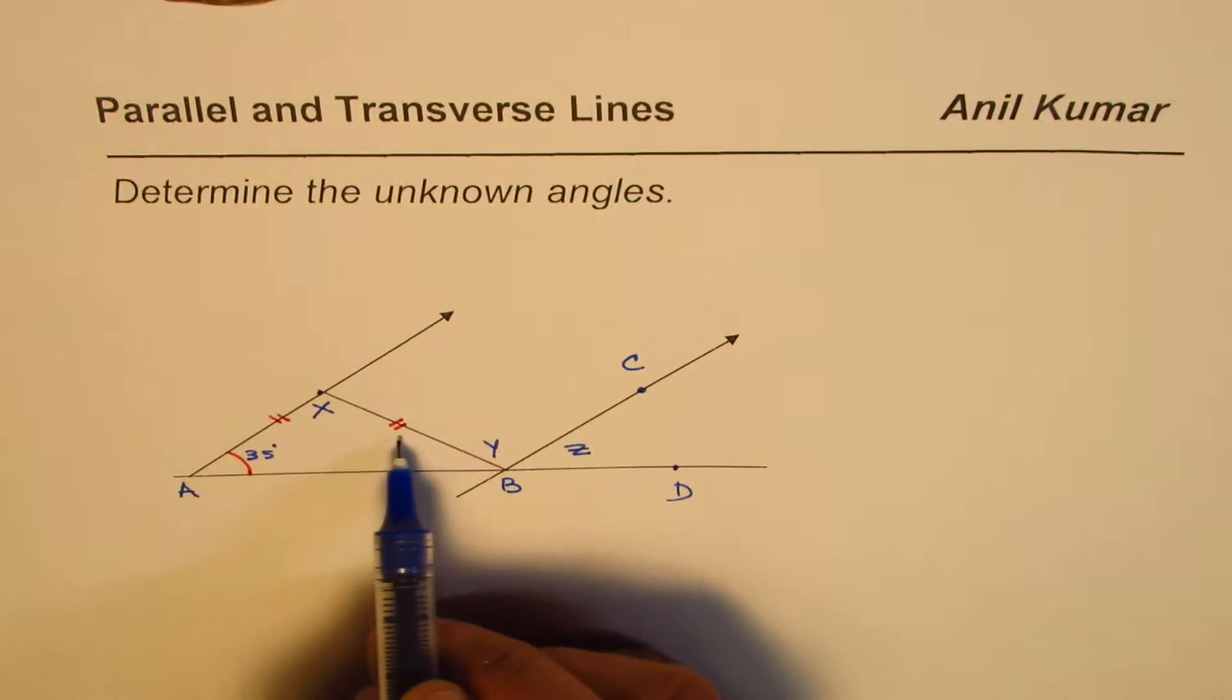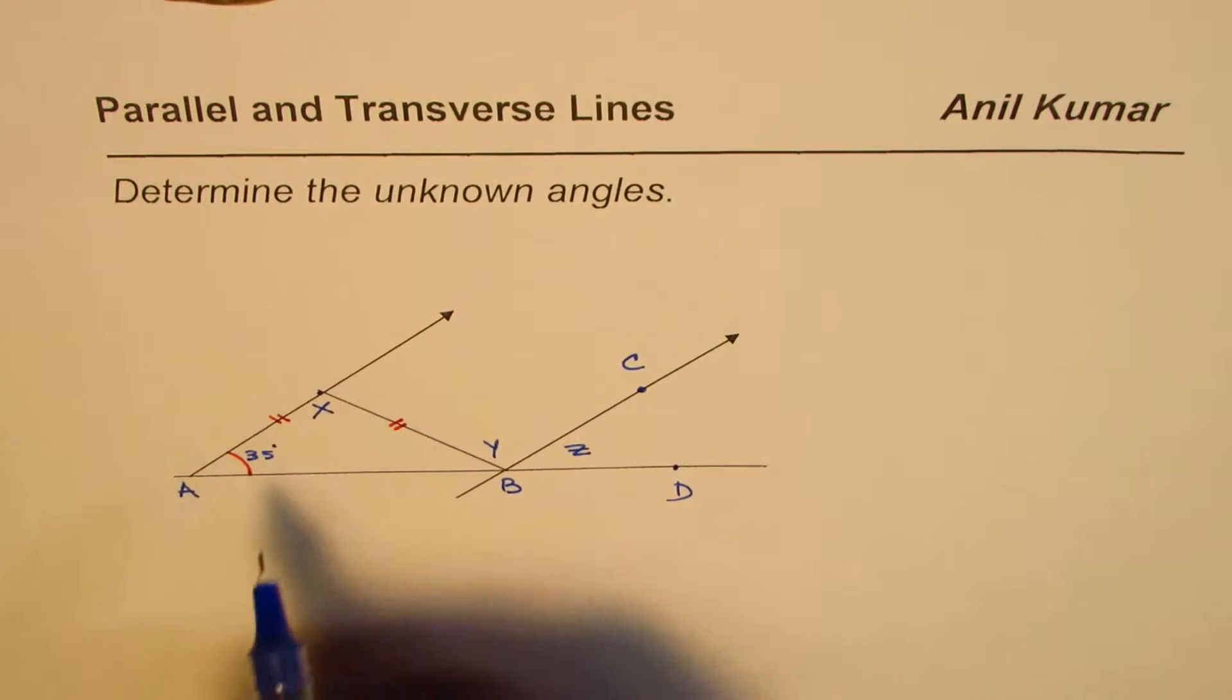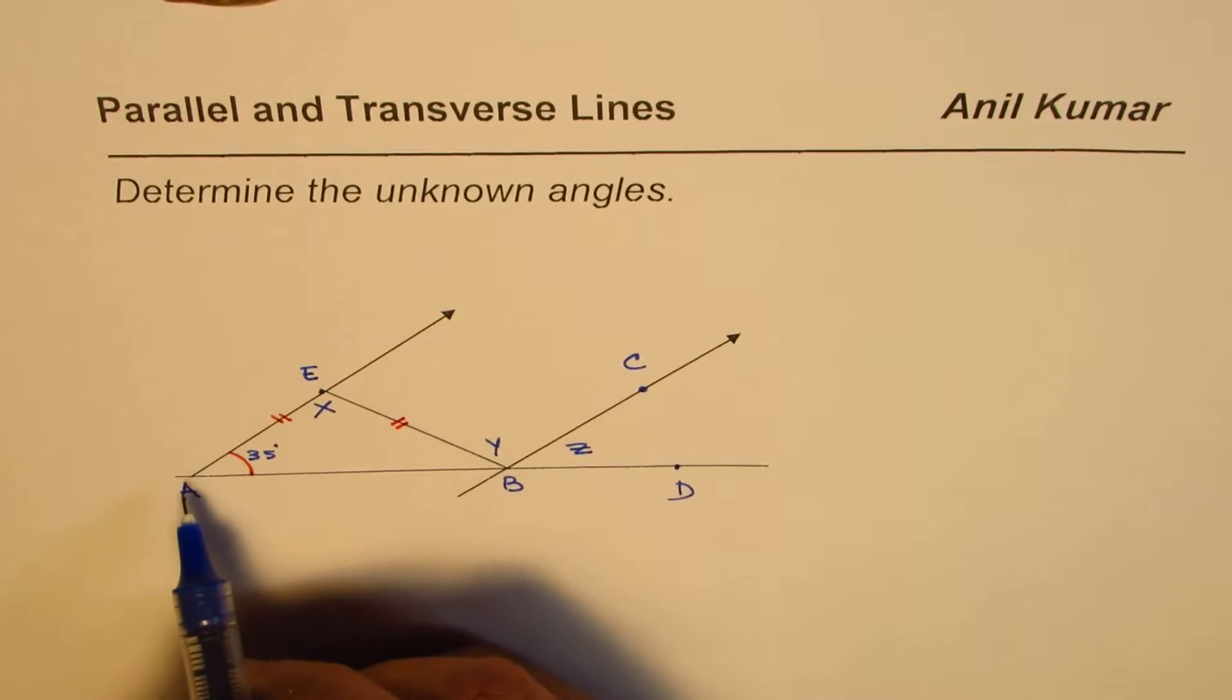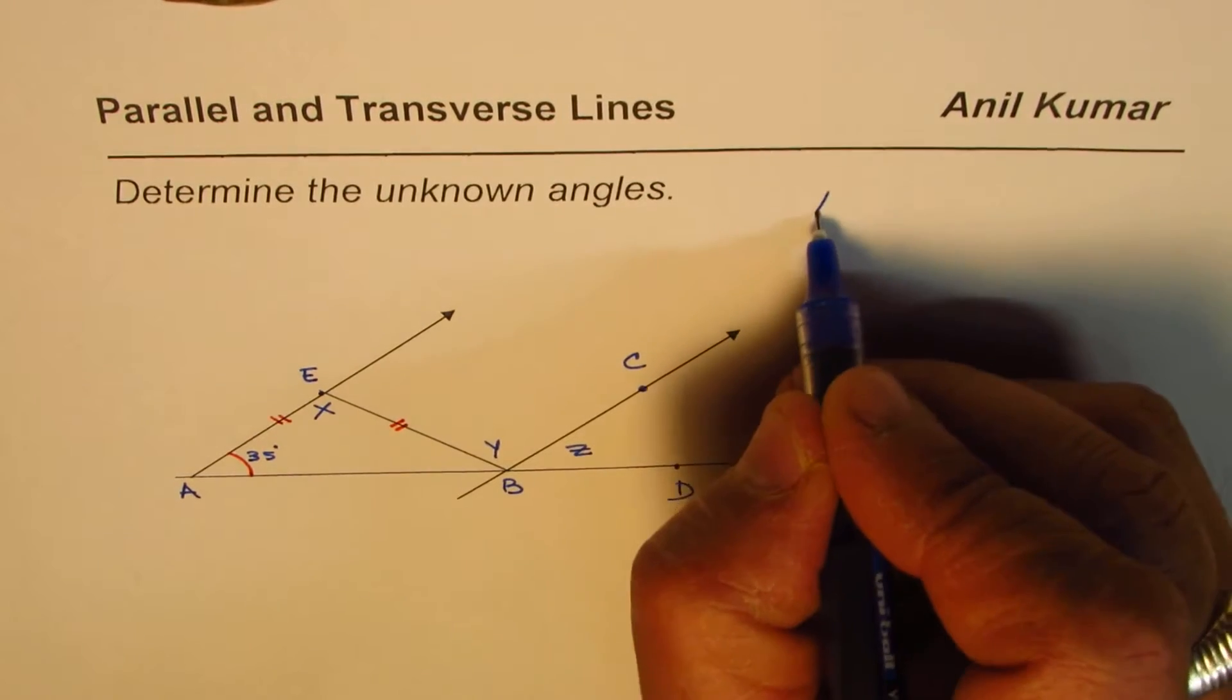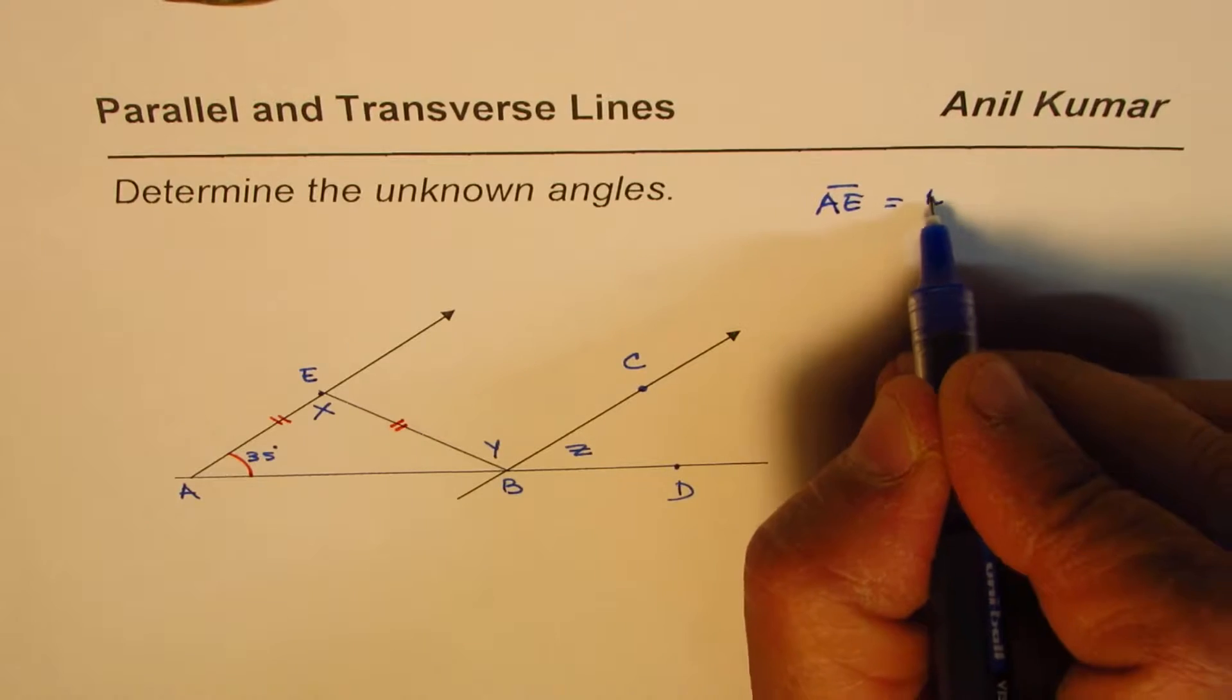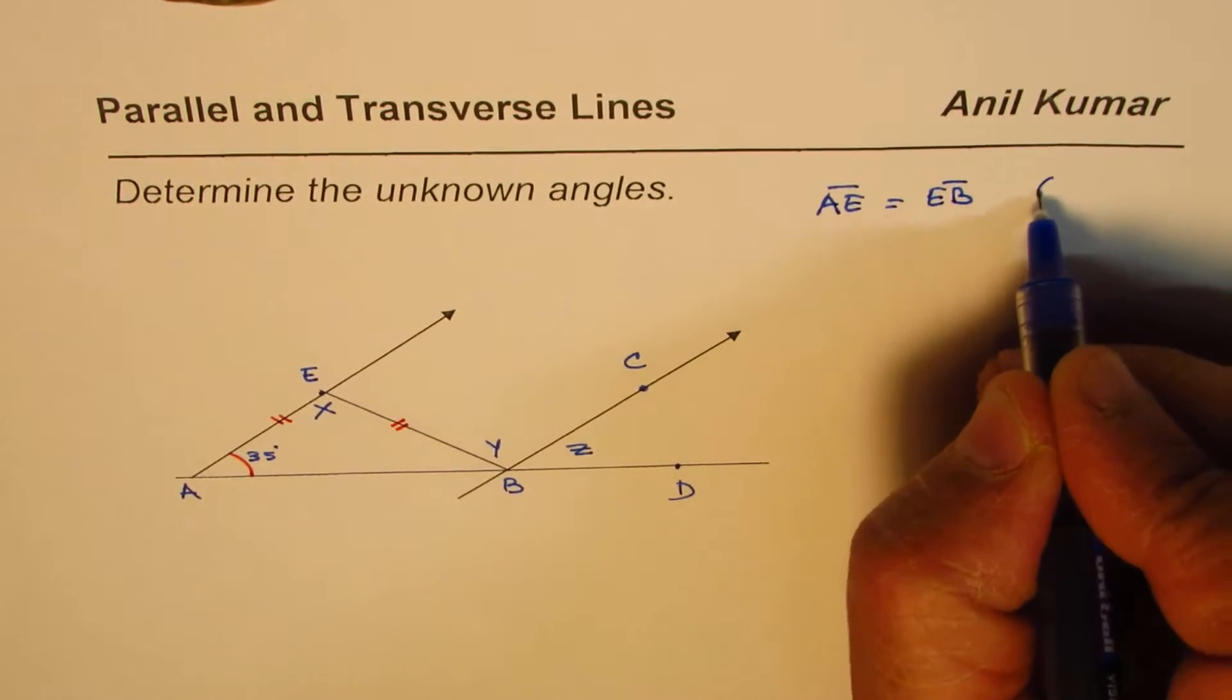Now since we have an isosceles triangle, let me call this point as e. So AE equals to EB, that is given to us.